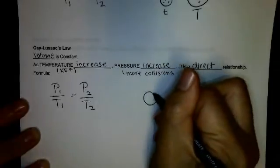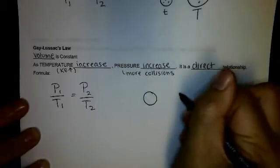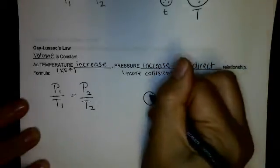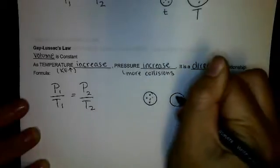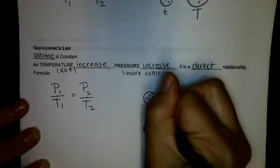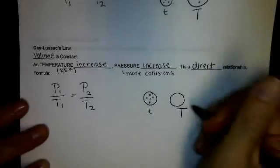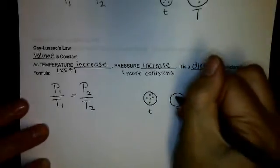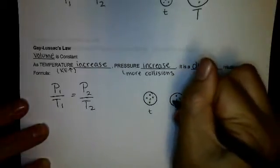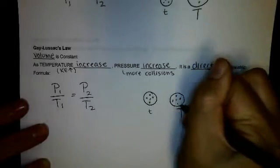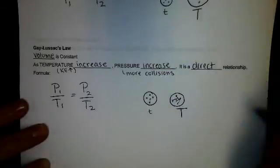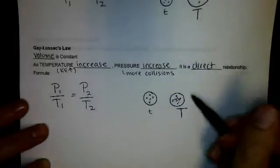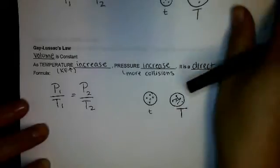In a rigid container, as gas particles go from a low temperature to a high temperature, they move around more, have more collisions, and those collisions result in higher pressure.